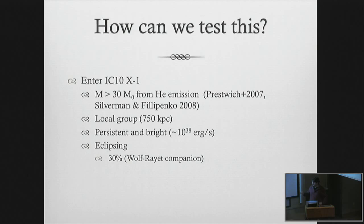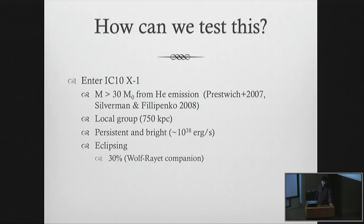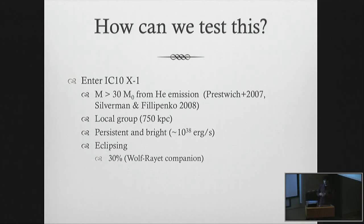The mass was determined from helium line emission. It's a tremendous system - always very bright at around 10 to the 38 ergs per second, in the local group so it's nearby. Most amazing about this system is that it's eclipsing for roughly a third of its period. The reason it's eclipsing so dramatically is that it has a wolf-rayet companion, and this thing is producing these copious winds.